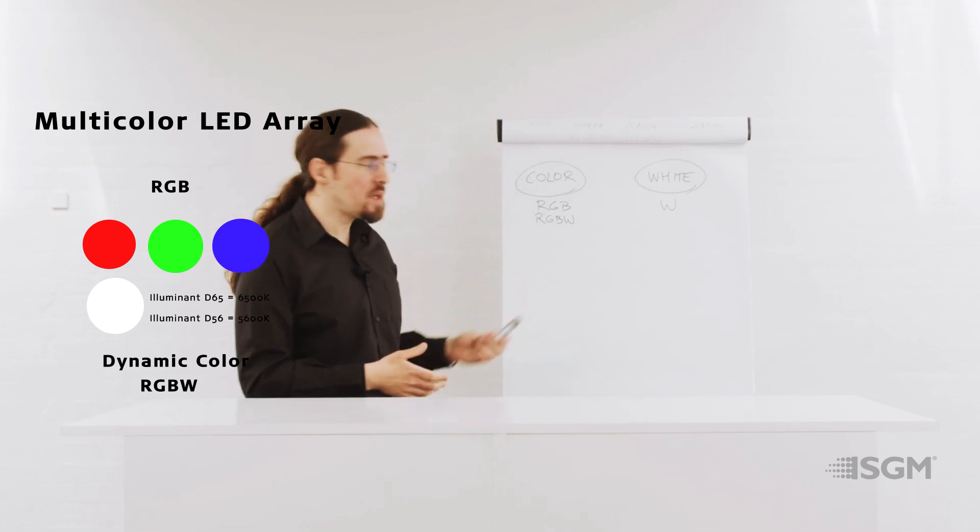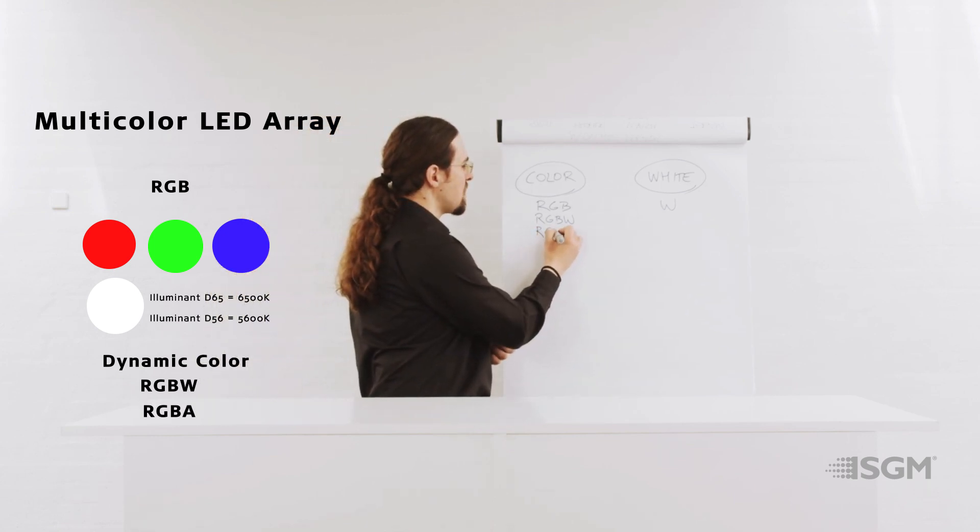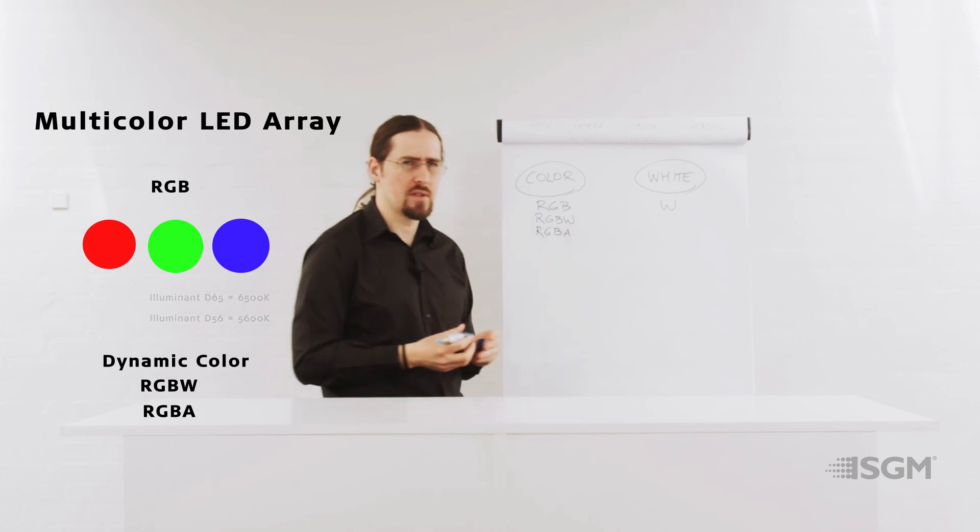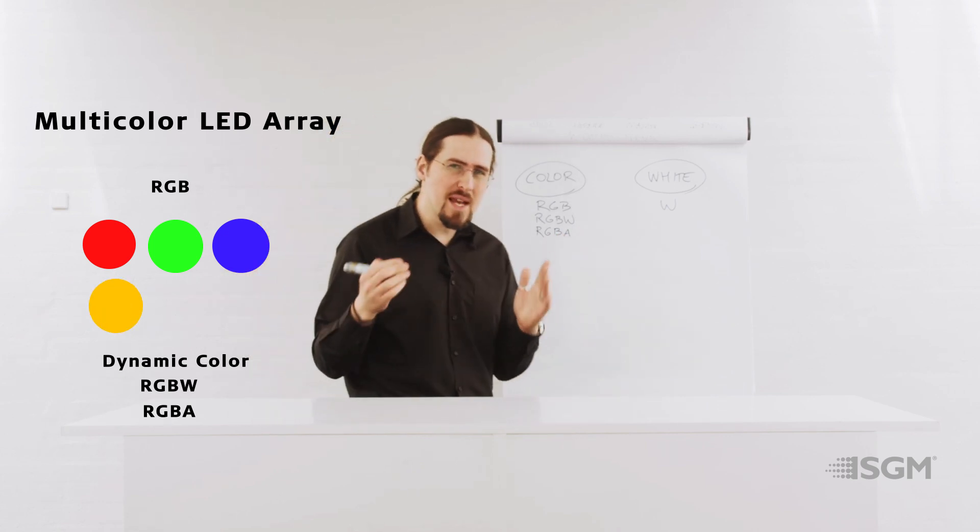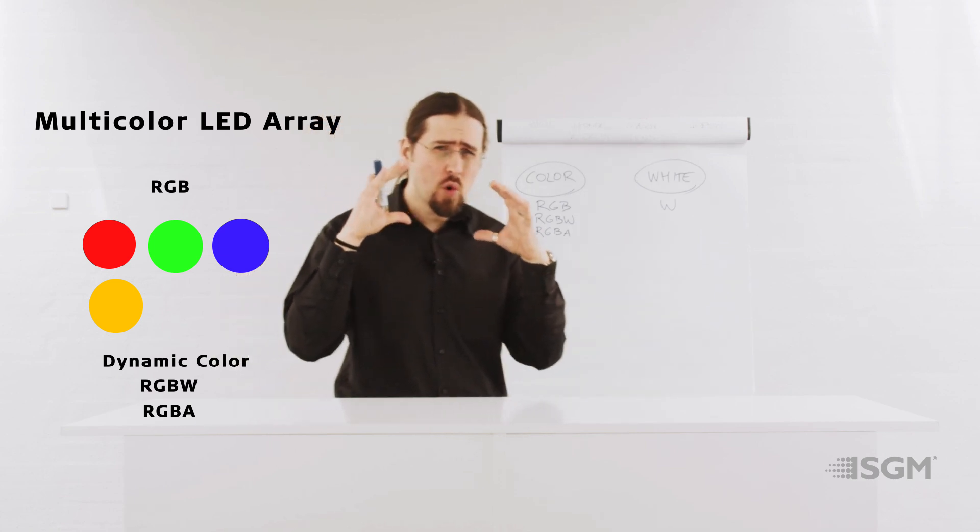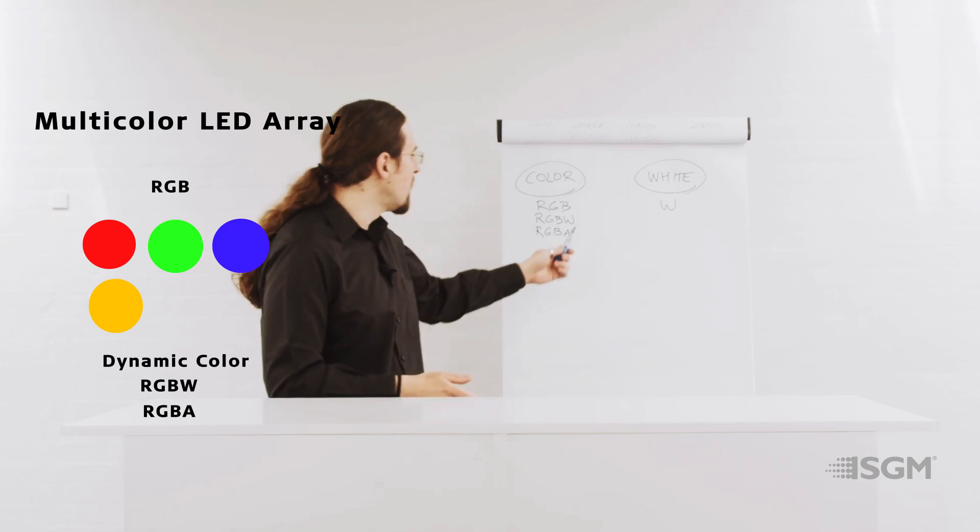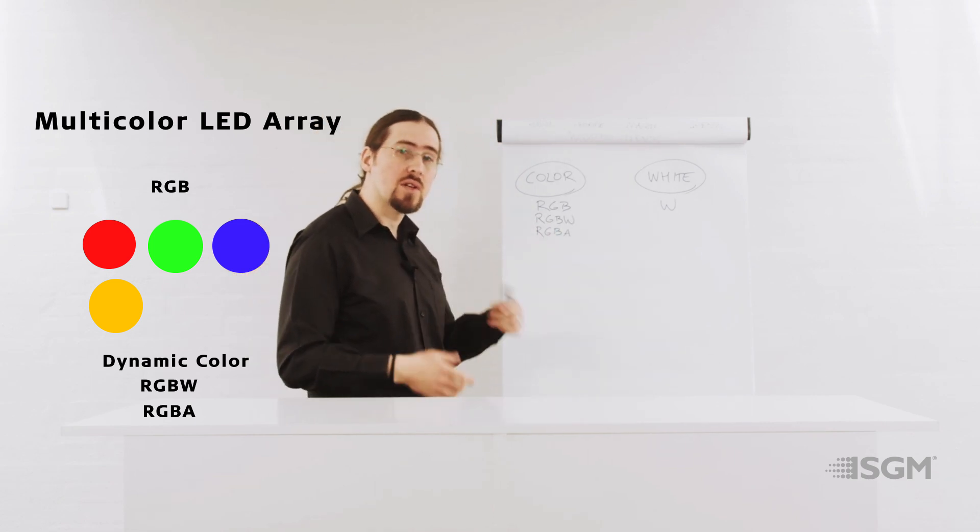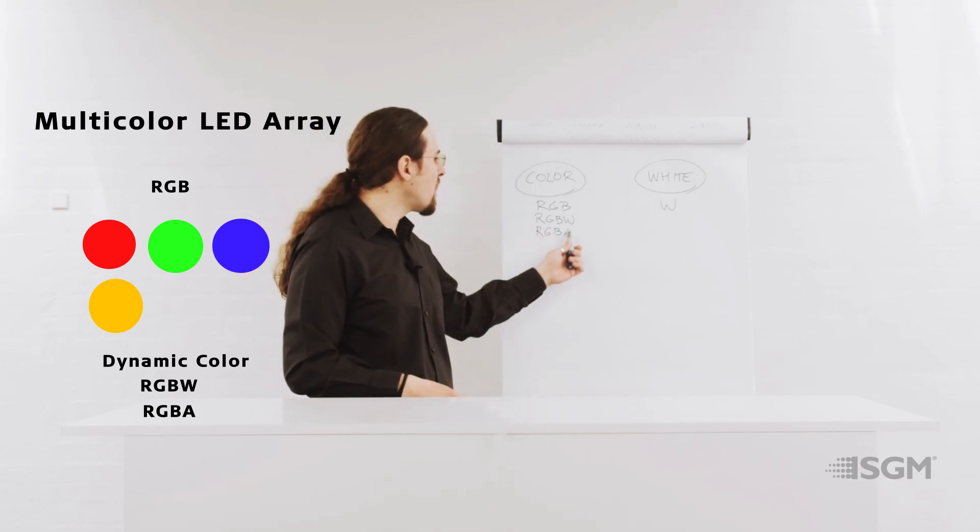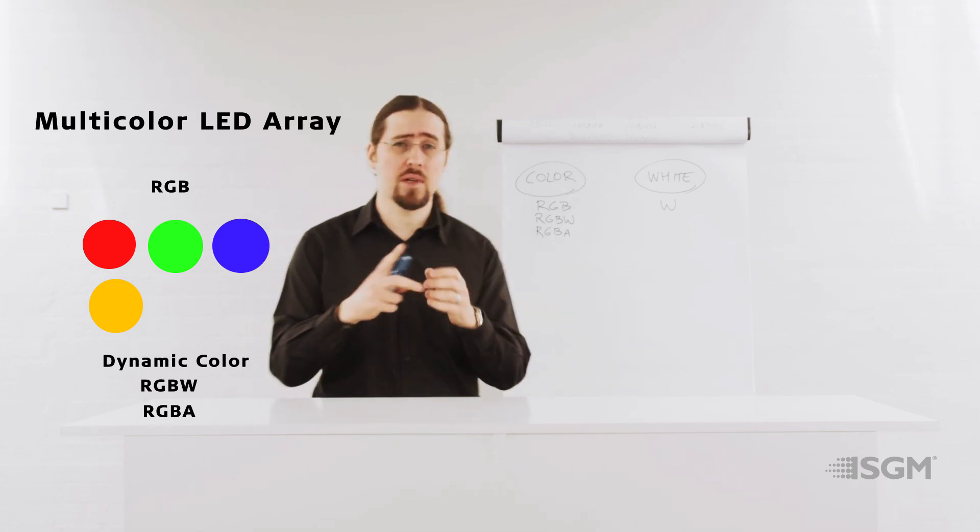Apart from RGB and RGB white, there is another variation of it, which is the RGB amber. And the RGB amber, the main difference is that you are replacing this very cool white, almost bluish white, that you have with the 5600K or 6500K, for a more warm white, that is actually not a white, it's more an amber.